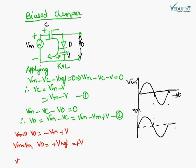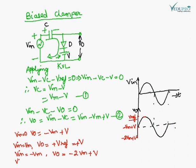When input is −Vm, output = −Vm + V. Labeling the output waveform: when input is Vm, output is V (Vreference); when input is 0, output is −Vm + V; when input is −Vm, output is −2Vm + V. The 0 level has shifted — this is the original 0 level, and it has been shifted to a new position.